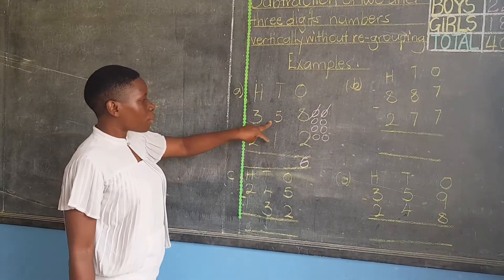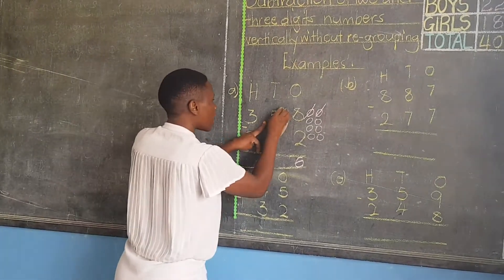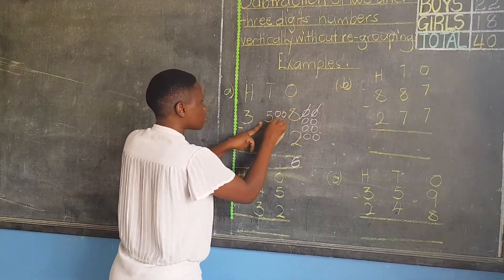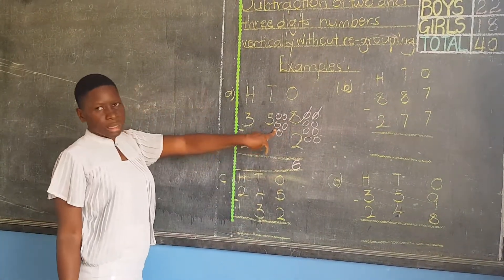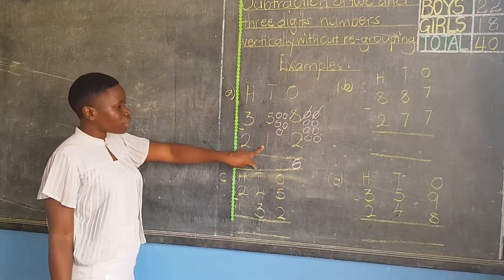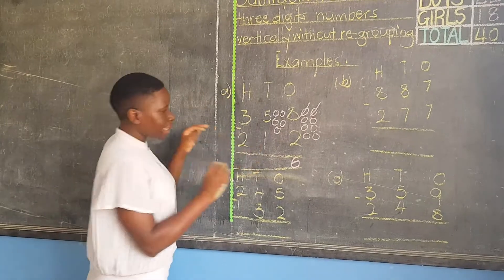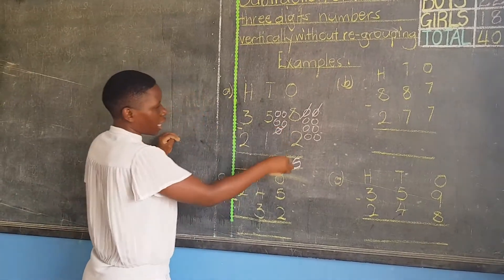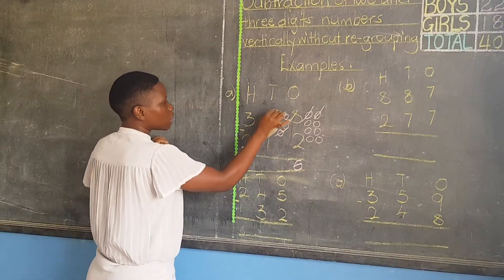Meaning, I am going to draw five balls. One, two, three, four, five. Out of the five balls, I am supposed to cancel only one. Then I cancel one, and I count the remaining balls.